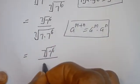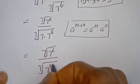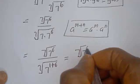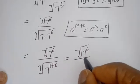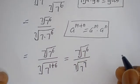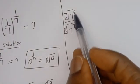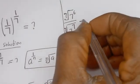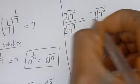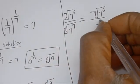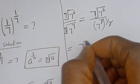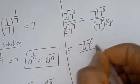Take note of this: if you have a to the power of m plus n, this is equal to a to the power of m multiplied by a to the power of n. Then this can be rewritten: the denominator becomes the 7th root of 7 to the power of 1 plus 6, which is the 7th root of 7 to the power of 7. And the 7th root of 7 to the power of 7 is equal to 7. This cancels, giving us the 7th root of 7 to the power of 6 divided by 7.